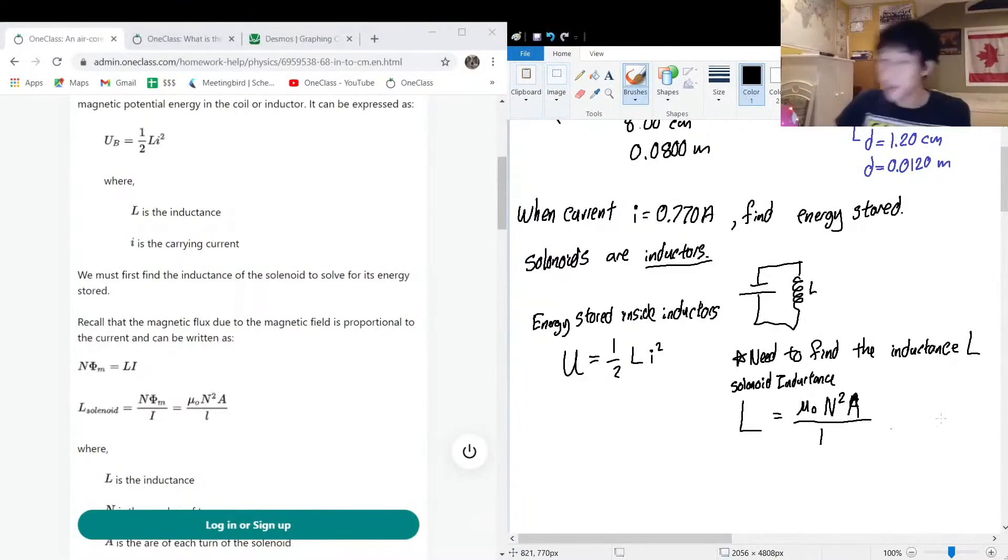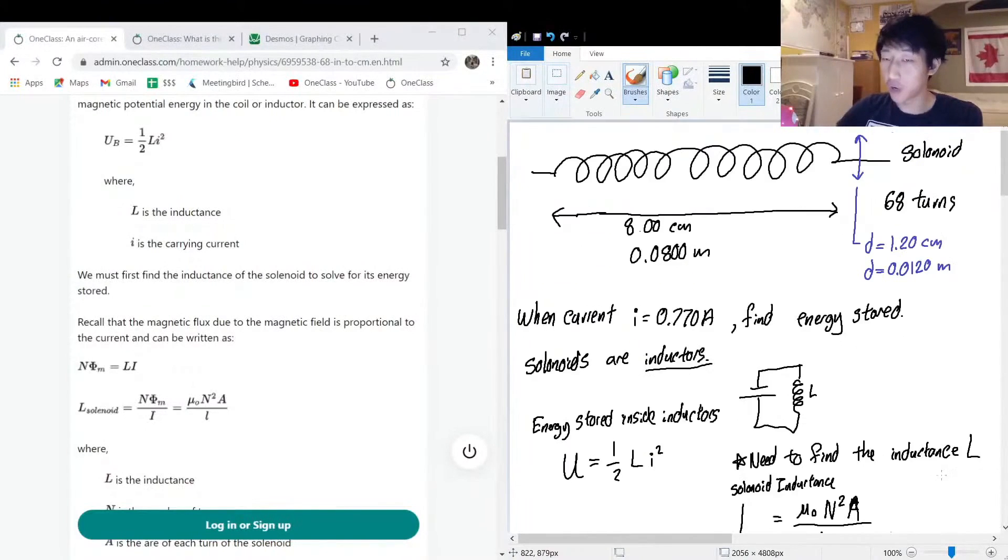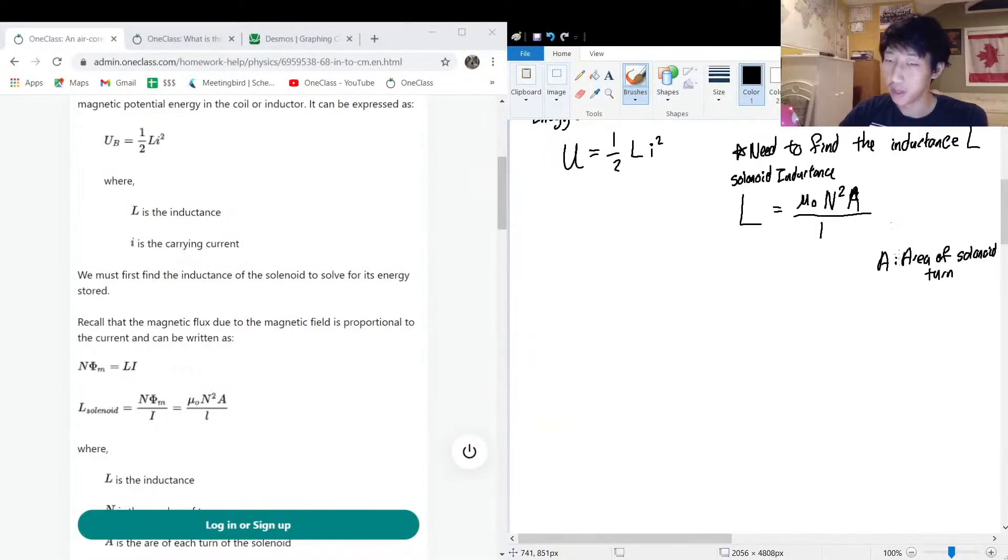Now we pretty much know all of these except for A. So A is the area of solenoid turn. But we don't know this directly, but we do know that it is, well, they are circular because these turns are always circular and they're easier to manufacture when they're perfectly circular. Like they're not really going to work out if they're squares or any other shape. So the diameter is 0.0120 meters. And if we get the area, area is equal to pi r squared.